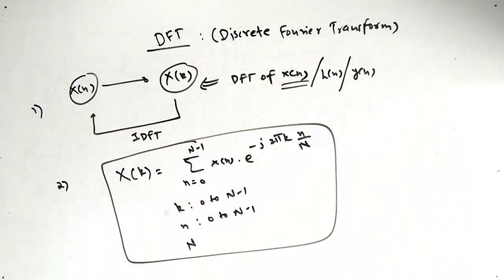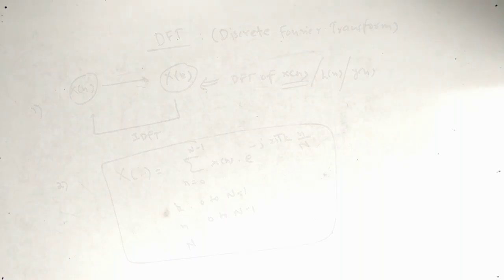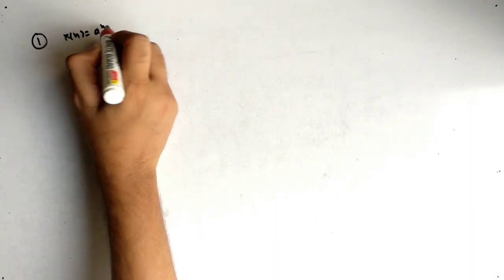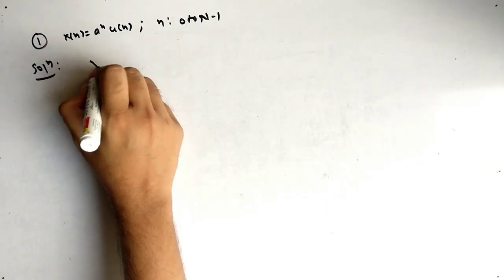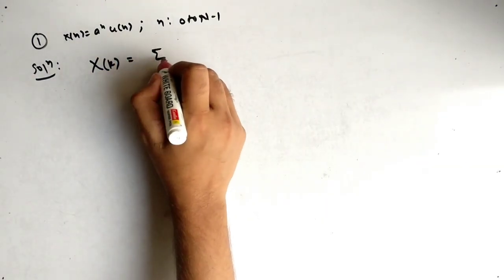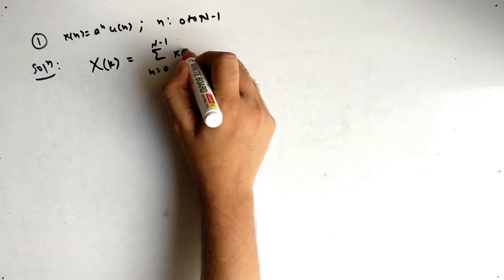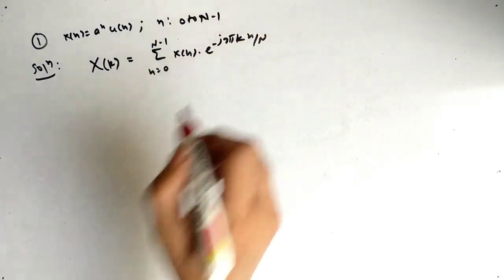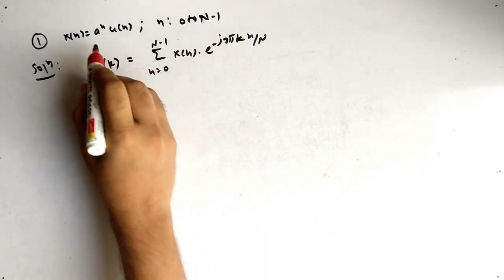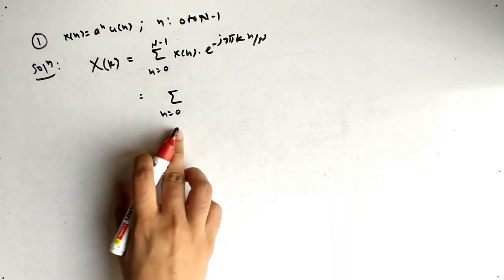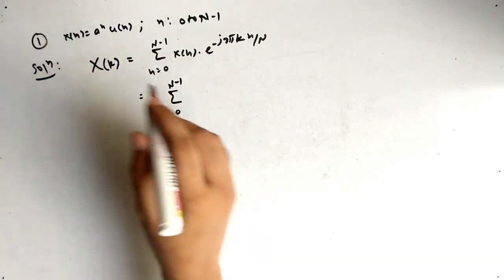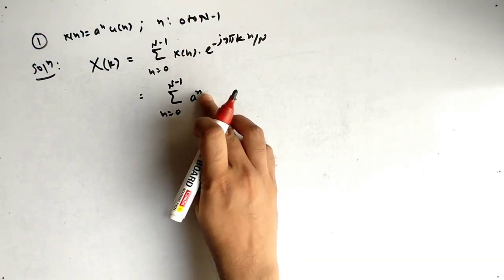This is the formula to find the DFT of any function, whether x[n], h[n], or y[n]. The first example question is: x[n] = a raised to n times u[n], where n ranges from 0 to N minus 1. We have to find the DFT of x[n]. Since u[n] means the graph starts from 0, the limits 0 to N minus 1 are correct.